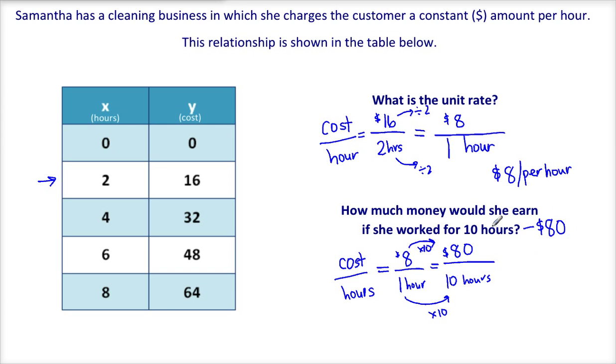And you can also see that we could just multiply the number of hours by the unit rate. Eight times ten gives us eighty dollars.